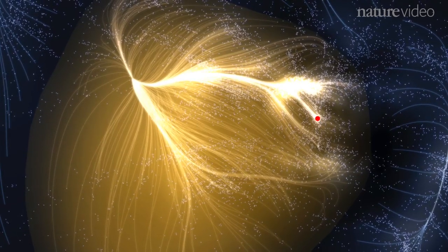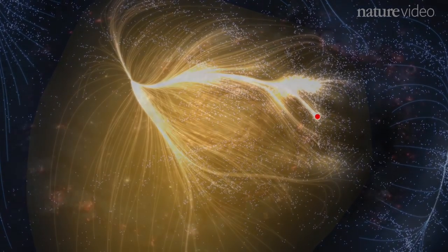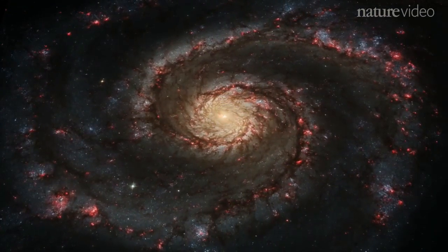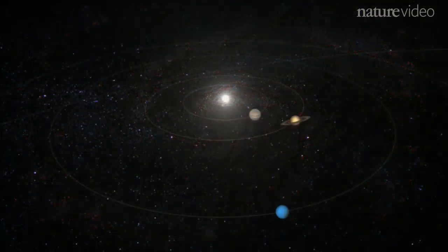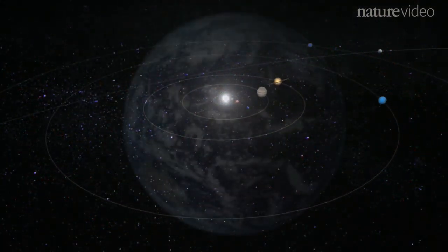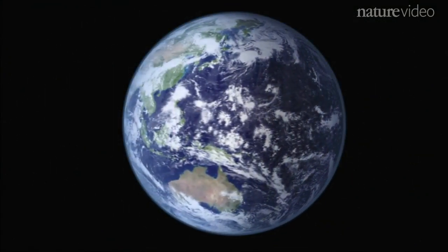So now we know that on the edge of a supercluster called Laniakea, in a galaxy called the Milky Way, around a star we call the Sun, there is a small blue planet. Our home.